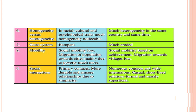Sixth, homogeneity versus heterogeneity — in racial, cultural and psychological traits, much homogeneity is noticeable in rural society, while much heterogeneity is seen in urban society. Caste system is rampant in rural society but much eroded in urban society. Seventh, mobility — social mobility is low in rural areas, with migration towards cities mainly due to poverty. In urban society, social mobility is based on achievement and migration towards villages is low. Eighth, social interaction — in rural society, primary contacts lead to more durable and sincere relationships due to simplicity. In urban society, there are numerous contacts and wide interaction but relationships are casual, short-lived, formal and mostly superficial.